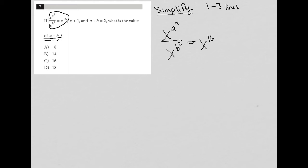It's basically this rule that says, if you have x to the a over x to the b, that's equal to x to the a minus b. So let me use that exact same rule here. So what I get is x to the a squared minus b squared equals x to the 16th.